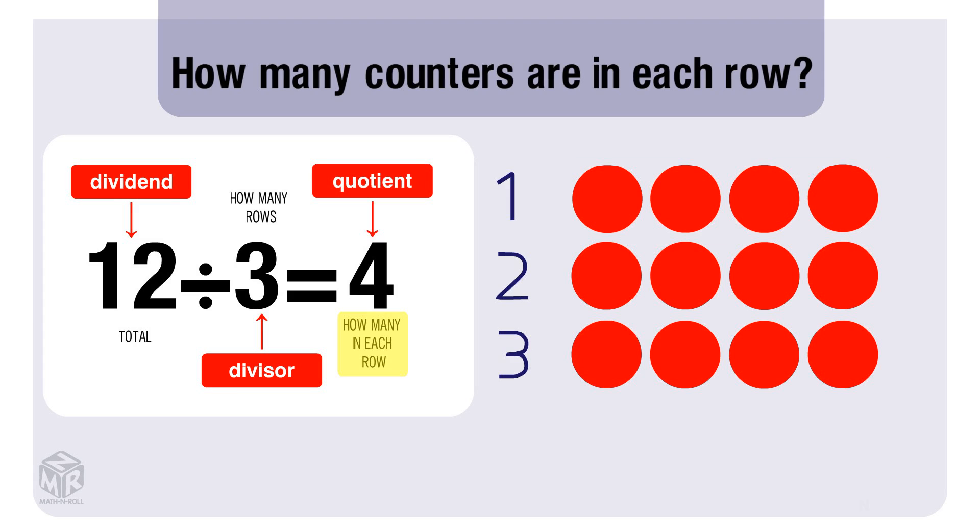12 is the dividend, 3 is the divisor, and 4 is the quotient. If you thought this video was helpful, please leave a like. For more videos like this, please subscribe.